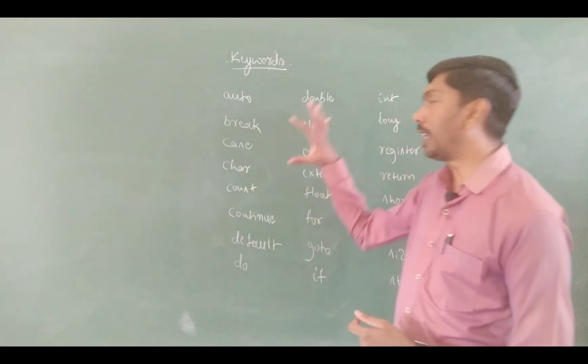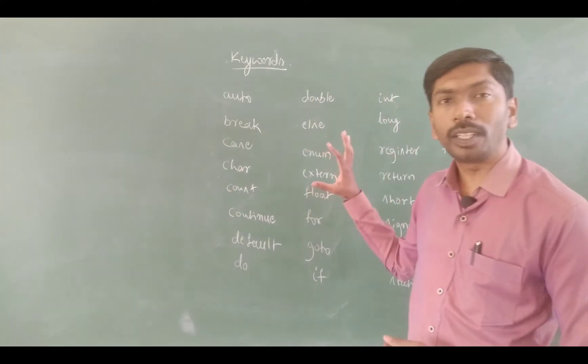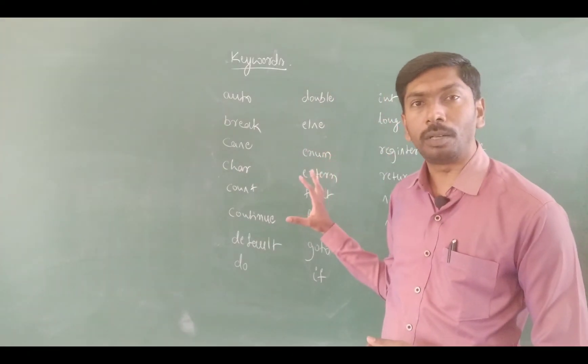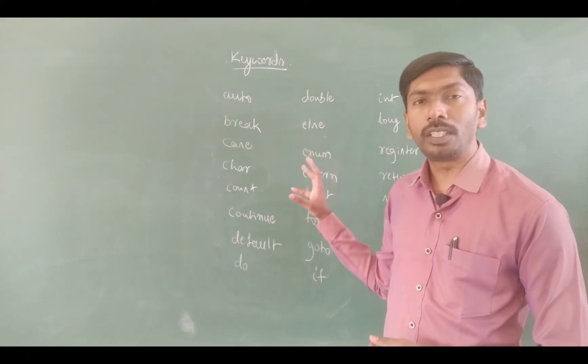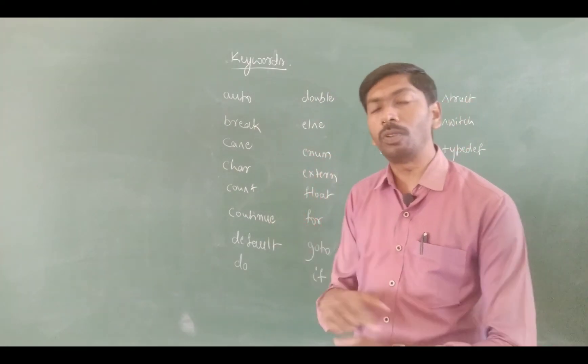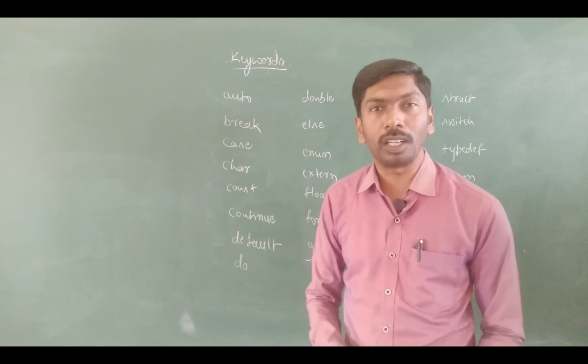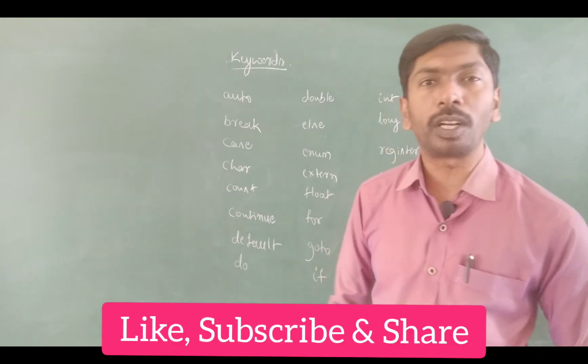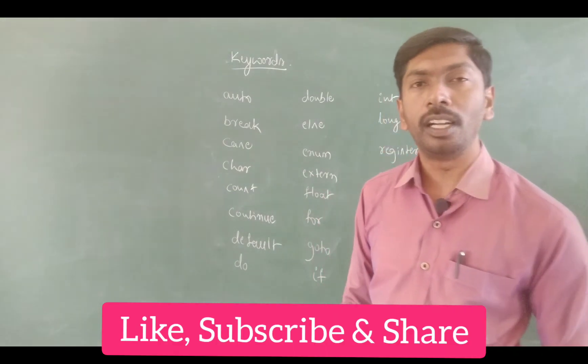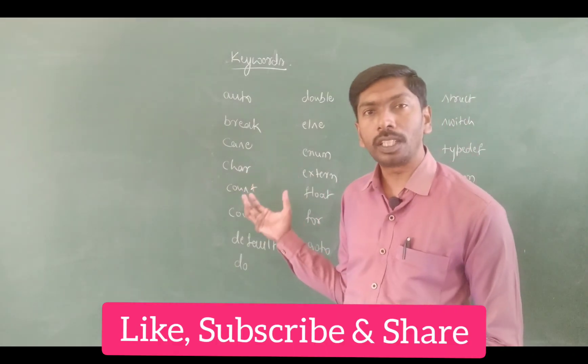There are 32 keywords in C programming, and through these 32 keywords the entire program is built.